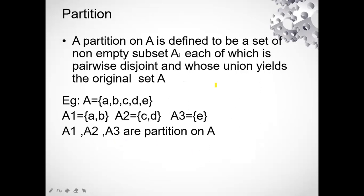So now second thing is partition and covering. What is this partition? Partition on A is defined to be set of non-empty subset Ai, which each of which is pairwise disjoint and whose union yields to the original set A. That means if what I'm going to do, I'm going to partition this capital A. This is a set A having these five elements. Now let's say I have A1 as {a,b}, A2 as {c,d} and A3 as {e}. There is no, the intersection of these two sets is null. Intersection of these two sets is null.